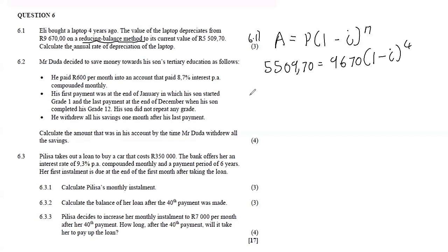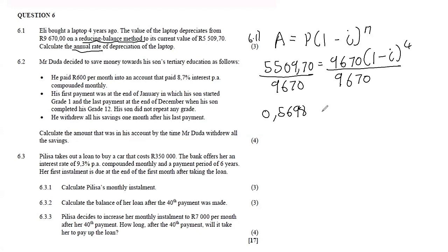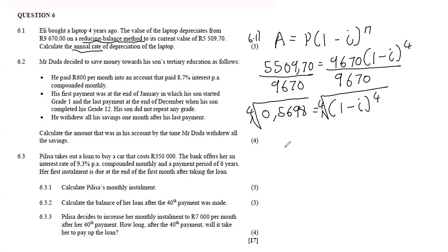At this stage we divide both sides by 9 670, giving us 0.5698 rounded to four decimal places. To get rid of the exponent 4, I take the fourth root of both sides, and punching that into the calculator I get 0.8688, again rounded to four decimal places.